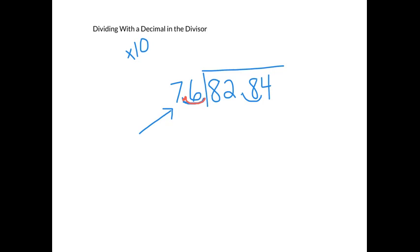I had to move it one place for this problem. So I have to do the same thing in the dividend, move the decimal point one place. So now my decimal point is here, and the problem is actually 828 and 4 tenths divided by 76.